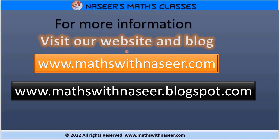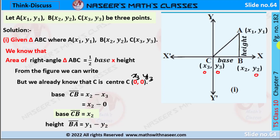For more information visit our website and blog www.mathswithnaseed.com and www.mathswithnaseedblogspot.com. Think and Discuss, page number 182, Chapter 7: Coordinate Geometry. Let A(x1, y1), B(x2, y2), C(x3, y3) be the three points of the given triangle ABC.